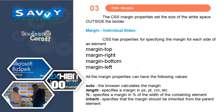Next one is the margin. The CSS margin properties set the size of the white space outside the border. CSS has properties for specifying the margin for each side of the element: margin top, right, bottom and left. All margin properties can have the following values: auto (the browser calculates the margin), length in px, pt, or cm, percentage of the width of the containing element, and inherit (margin inherited from the parent element).